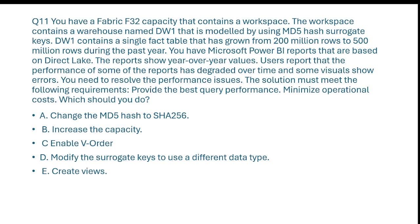Changing the hash algorithm — is it really going to help? No. SHA-256 is computationally heavier than MD5, so this is not going to work. The issue is not with the key hashing but with the large table size and inefficient storage format, so A is incorrect. Option B: increase the capacity. While increasing Fabric F32 capacity might help, it increases operational cost significantly, and that doesn't meet our requirement to minimize operational cost — so strike out B.